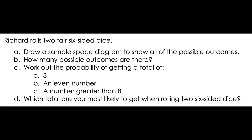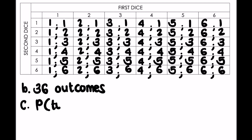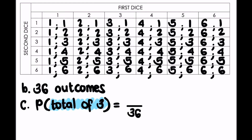The next question says: work out the probability of getting a total of three. We know there are 36 possible outcomes, so we want to know how many of those give a total of three. Looking at the table, a total of three would be one and two, or two and one — those are the only options that combine to give us three. So we have a two out of 36 chance, and two out of 36 simplified becomes one out of 18.